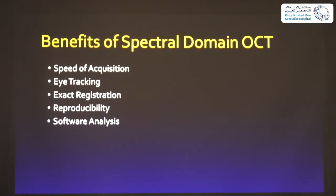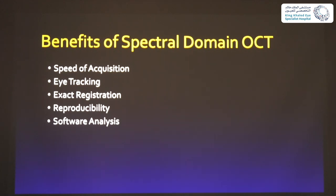The benefits of spectral domain OCT include speed — people don't have to hold still for a long time — and eye tracking, since everything goes in very fast so the machine keeps the point of fixation in the same place. Exact registration is very helpful for follow-up examinations: the machine registers where it took the image based on vessel landmarks, and next time the patient comes in, it will put itself in exactly the same place so you can compare. Reproducibility and software analysis are also key advantages — the software analyzes thicknesses for you.